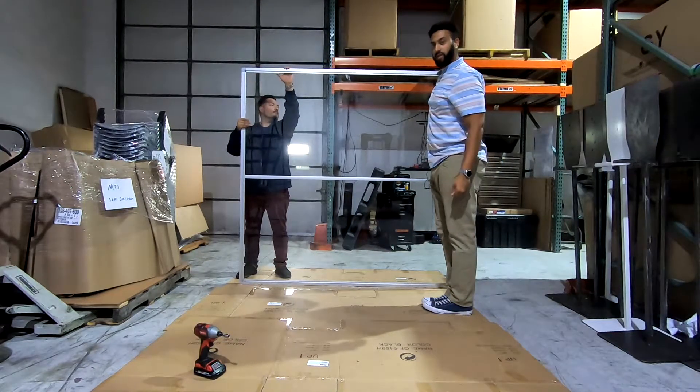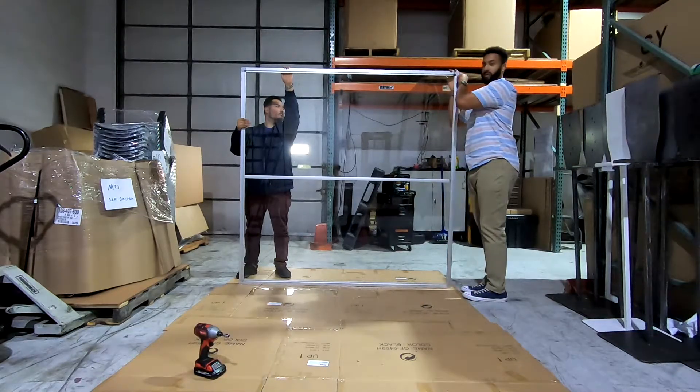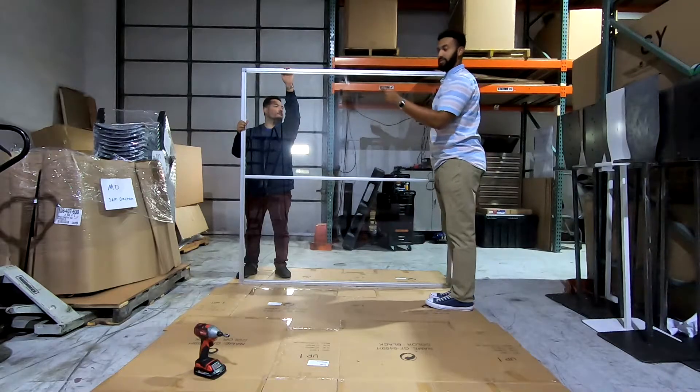After you have it placed, you will then take the two screws and screw them into the sides here so the bracket stays stationary.